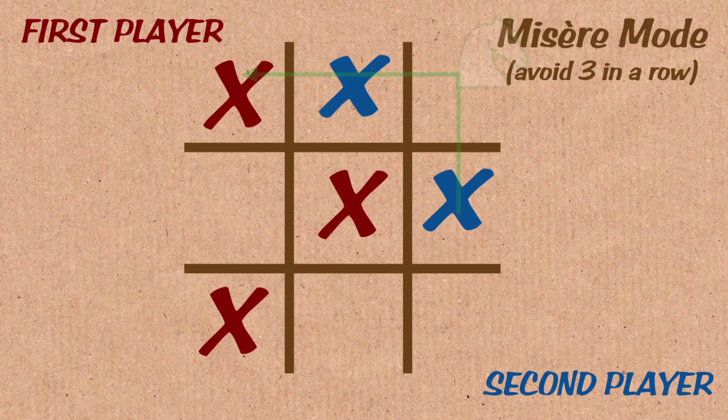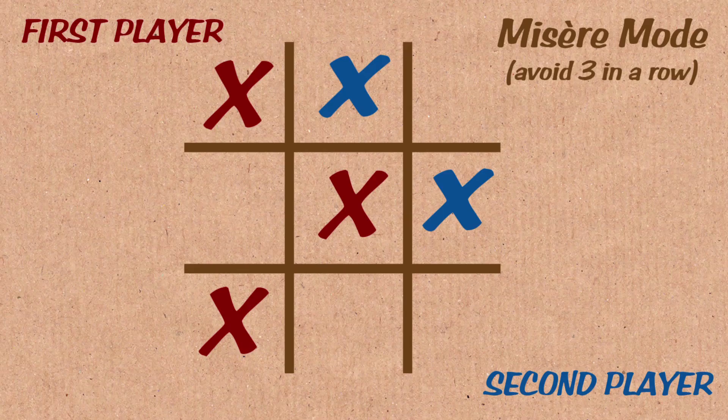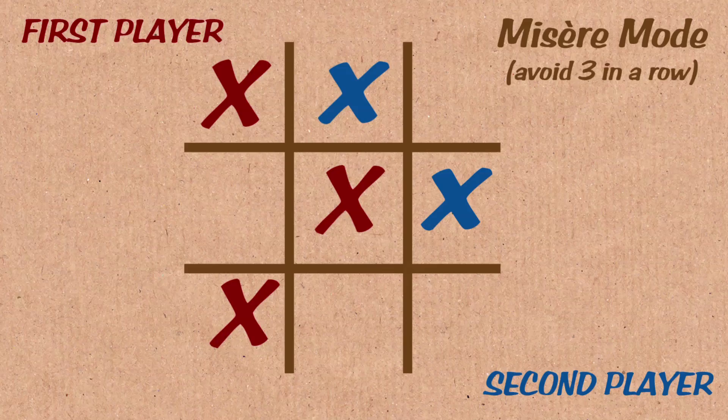And now I have this interesting Y shape or Z shape here, plus a little blob in the opposite corner. And now this, if you stare at it, you can see wherever you play, you're going to make three in a row and lose.